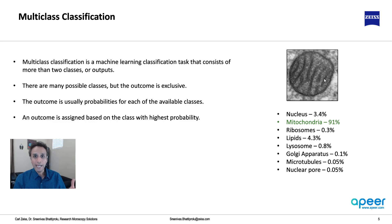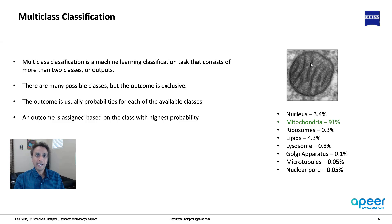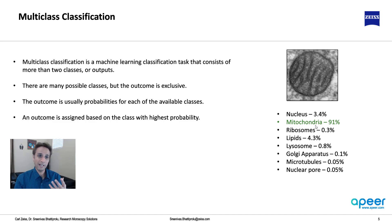A good biological example: classifying organelles within a cell. The model gives 91% probability that this is mitochondria, 3.4% that it is a nucleus, and 4.3% that it is a lipid — which usually appears dark in electron microscope images. The remaining classes have very low probabilities. This is typical output of multi-class classification, where one class has a high enough confidence for us to say definitively: this is mitochondria.